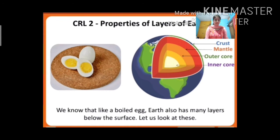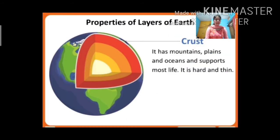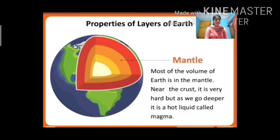Properties of layers of earth. We know that, like a boiled egg, earth also has many layers below the surface. The first layer is the crust — it has mountains, plains and oceans, and supports most life. It is hard and thin. The second layer is the mantle — most of the volume of the earth is in the mantle.